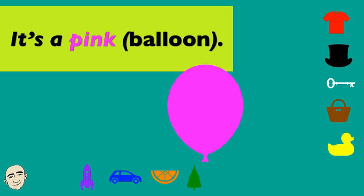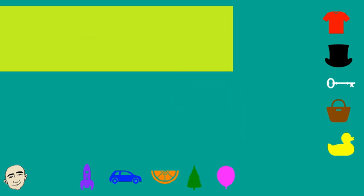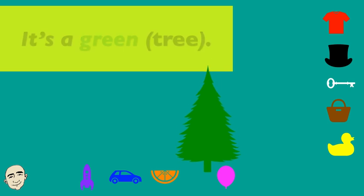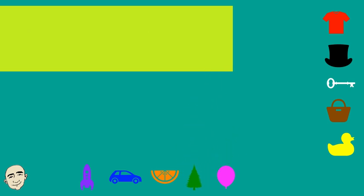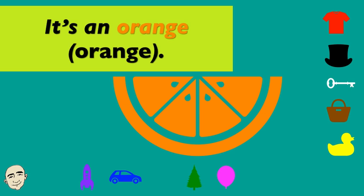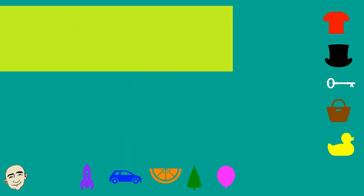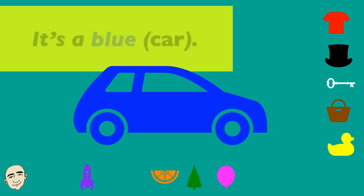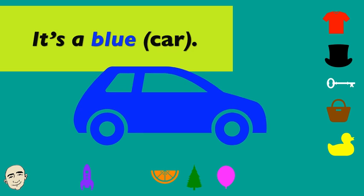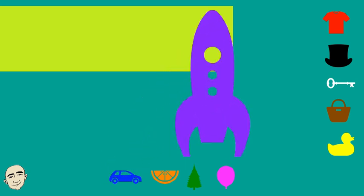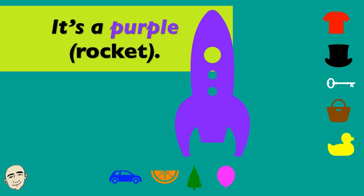It's a pink balloon. It's a green tree. It's an orange orange. It's a blue car. It's a purple rocket.